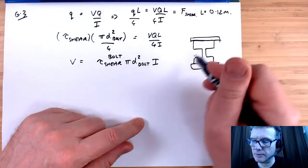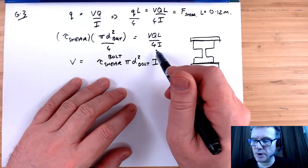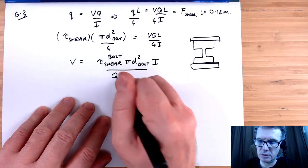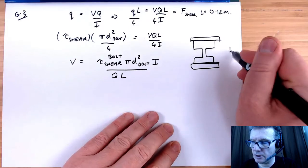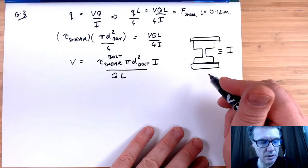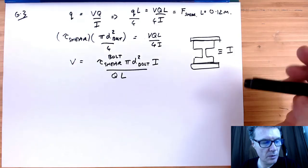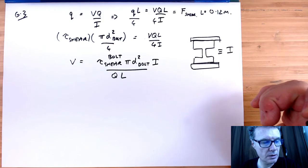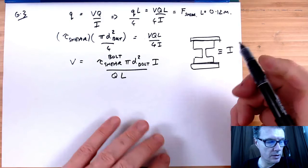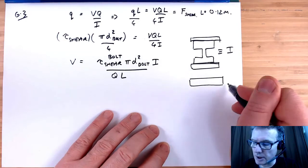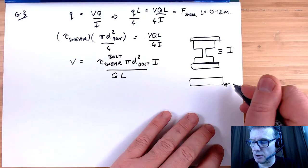We need the second moment of area I for the whole structure, then divided by Q. What will be Q? We look at that in terms of the top plate, because we're interested in the shearing stress at that location.